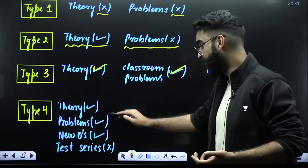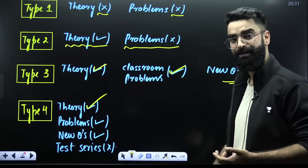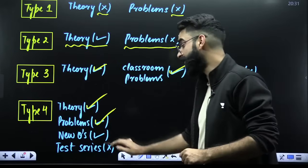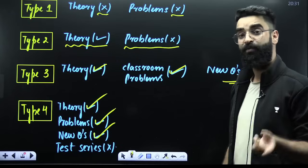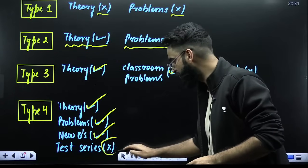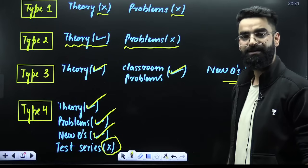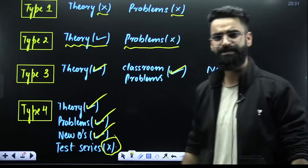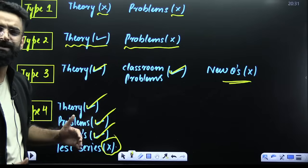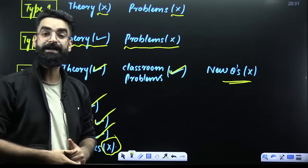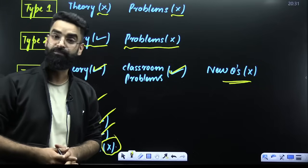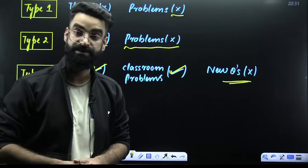Your type 4 students are able to understand the theoretical part, solve classroom problems, and solve new questions as well. But when they write the chapter-wise test or test series, they are unable to solve the questions. These are the 4 types of students who have asked me how to make their physics stronger and score really high — 160 plus in physics.